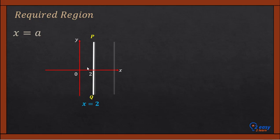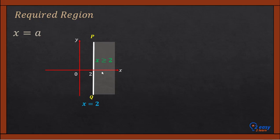On the right-hand side of line PQ, all x-coordinates are greater than 2 — 2, 3, 4, 5, and so on — so the inequality for this region is x greater than or equal to 2. You can keep a rule in mind: for a vertical line, the left-hand side region is x less than a, and the right-hand side is x greater than or equal to a.